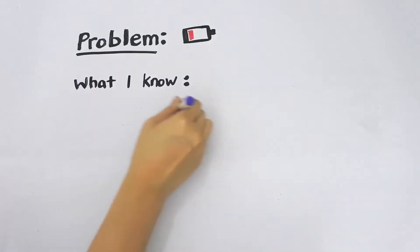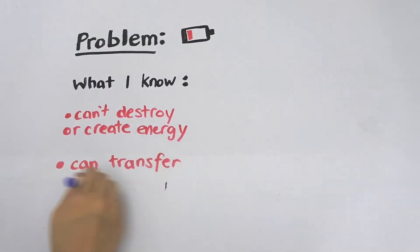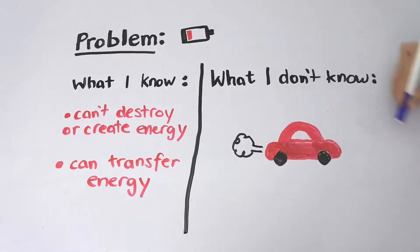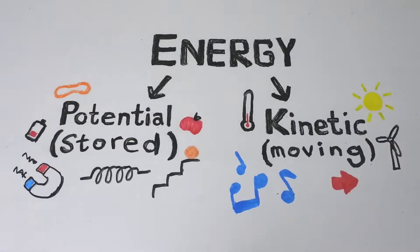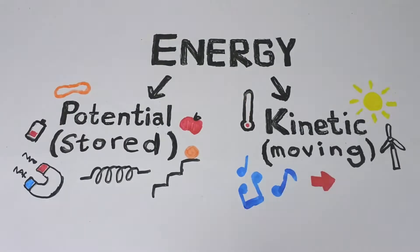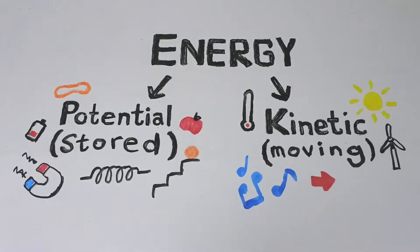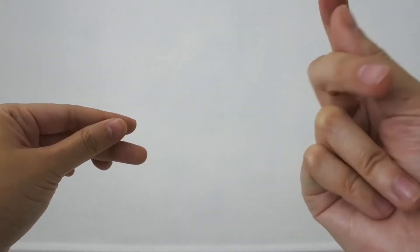I know you can't destroy or create energy, but it can be transferred from one form to another. So how can I transfer energy to my car? I did some research and this is what I learned. All energy is classified as potential energy — also known as stored energy — or kinetic energy, also known as moving energy.